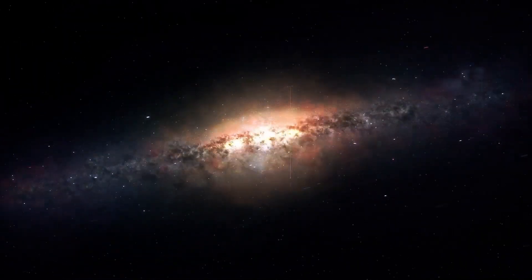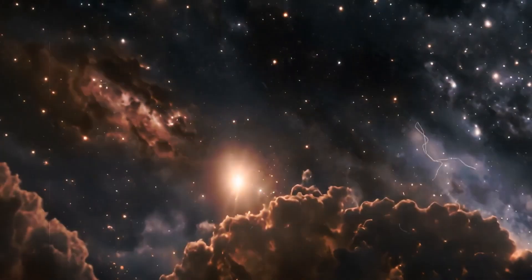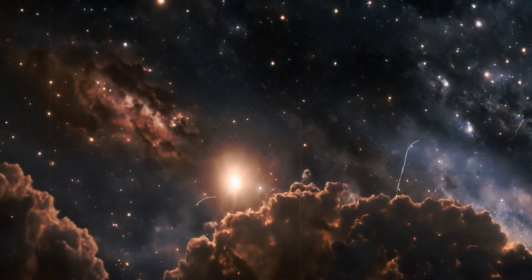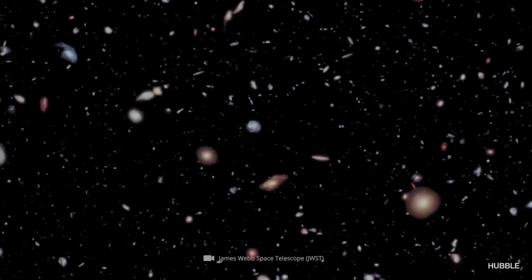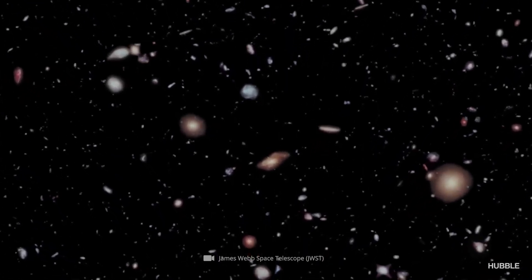Even light, which can circle the Earth seven times in a single second, seems relatively slow compared to the vastness of our solar system. Although our solar system is vast, it is dwarfed by the enormity of the Milky Way galaxy.